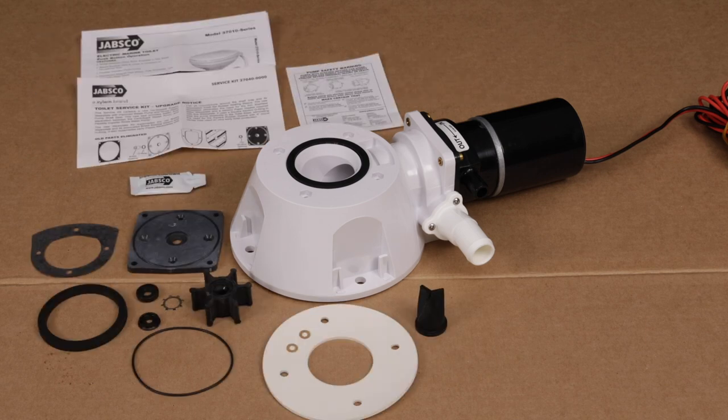The Service Kit contains a number of parts, including the rubber-flexible impeller, gasket, o-ring, wear plate, a joker valve, a white bowl-to-base gasket for the old-style toilet, black o-ring seal for newer-style toilets, a few small seals, star-shaped seal retainer, and lubricant for the impeller.